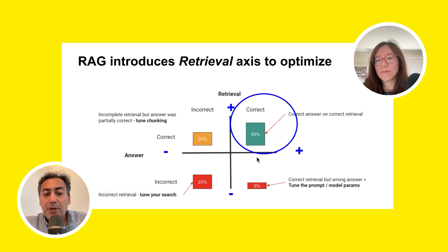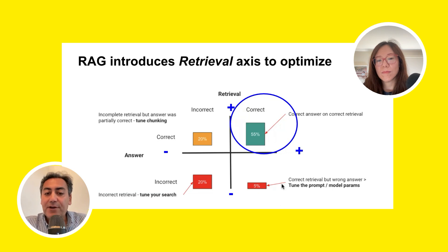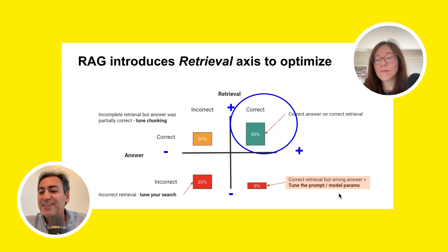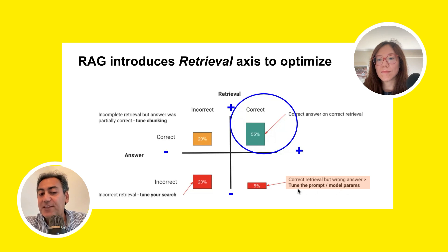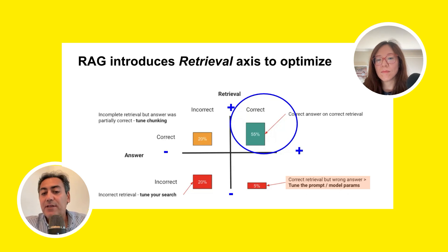The bottom-right is when the retrieval is correct, but because of the prompt or the model parameters, the LLM is not able to generate the correct answer. So we have to tune those two things. Maybe the prompt is bad and the LLM doesn't figure it out, or maybe we need to do a fine-tune.